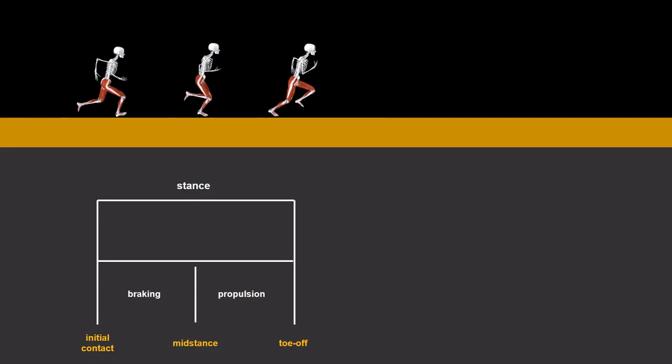The additional event of mid stance can be used to split the stance phase into braking and propulsion phases. The rest of the gait cycle makes up the swing phase, which starts at toe off and ends back at initial contact where the cycle repeats.